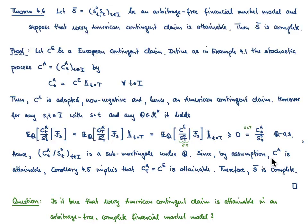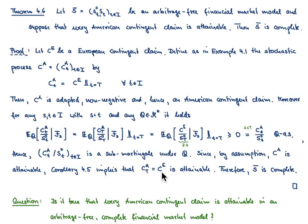By assumption, this American contingent claim is attainable. Hence, the previous corollary 4.4 implies that the European contingent claim C^A_T, which equals C^E, is attainable. This shows that the financial market model is complete by definition.